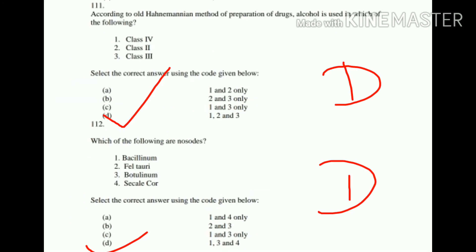Question number 111: According to the old Hahnemannian method of preparation of drug, alcohol is used in which of the following? 1. Class 4, 2. Class 2, 3. Class 3. All three — 1, 2, and 3 — are correct. Option D is correct, as classes 4, 2, and 3 all use alcohol for drug preparation.